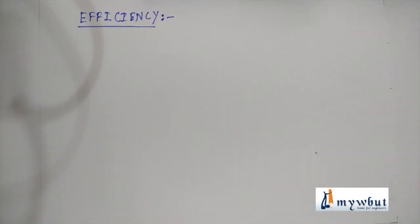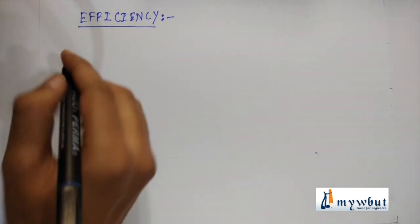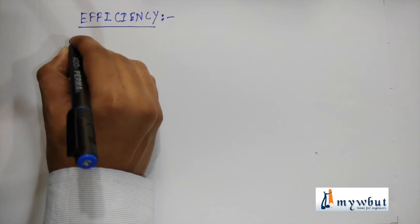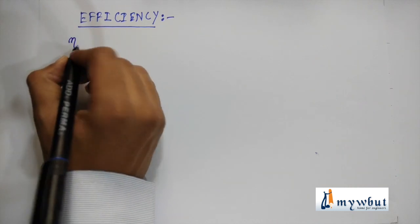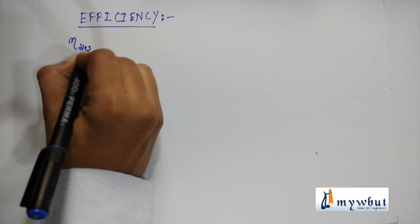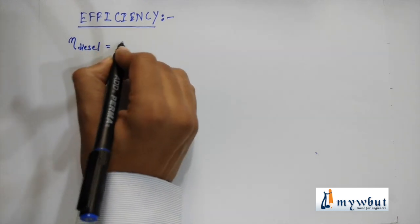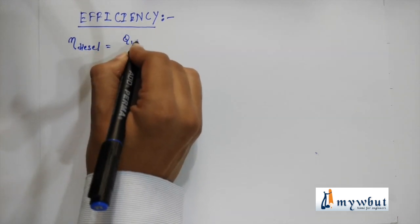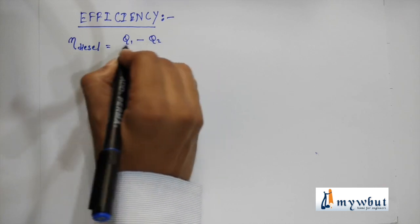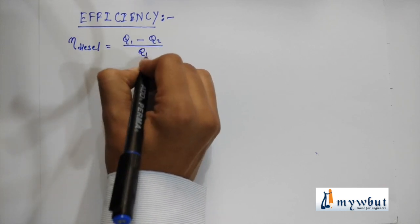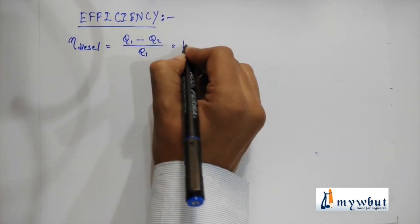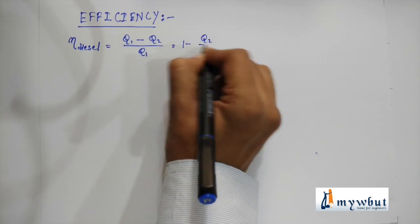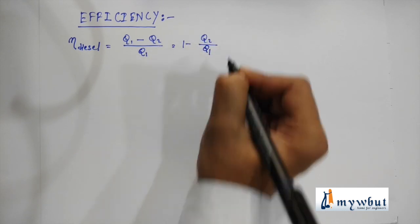Now let us proceed with the efficiency of a diesel cycle. As we already know that efficiency is denoted by eta, we can write eta_diesel is equal to (q1 - q2)/q1, that is equal to 1 - q2/q1.